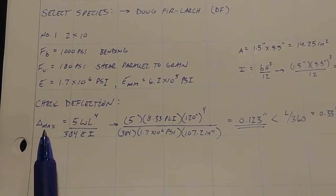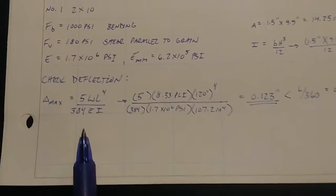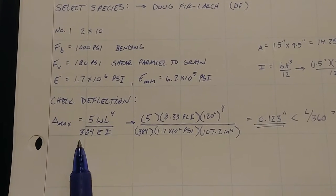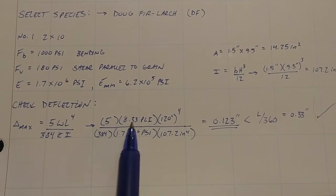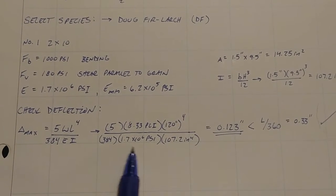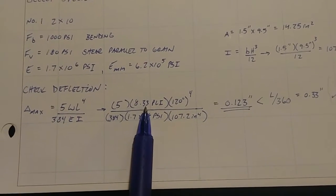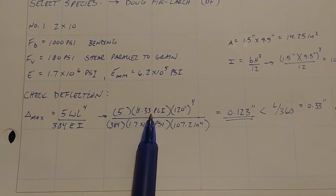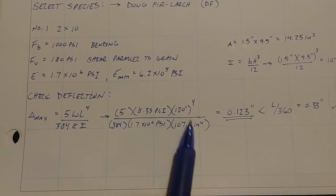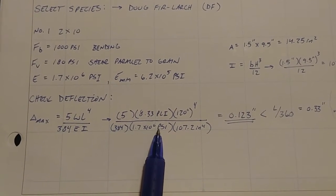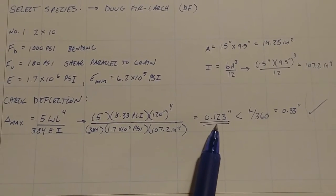So for a distributed load, the equation is 5WL to the fourth over 384EI. You plug all that in. Remember, I like to keep everything in pounds and inches for this case. So your length may be 10 feet, but that's got to be converted into inches. Your W might have been the 100 PLF. You had to break that down into PLI. And everything else should be good. Inches, inches, pounds, inches, pounds, inches. Okay. So we're good. That dumps out 0.123 inches.